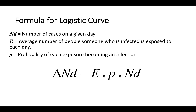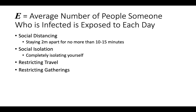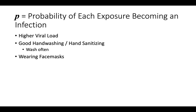There's a formula for a logistic curve. The change in the number of cases each day is based on E — the average number of people someone who is infected is exposed to each day — and P, the probability of each of those exposures becoming an infection, times the number of people actually infected at that time. To limit E, we use social distancing — staying two meters apart for no more than 10 to 15 minutes — social isolation, restricting travel, and restricting gatherings. To reduce P, we address higher viral loads through good hand washing, hand sanitizing, washing often and well, and for healthcare workers, wearing face masks and other protective equipment.